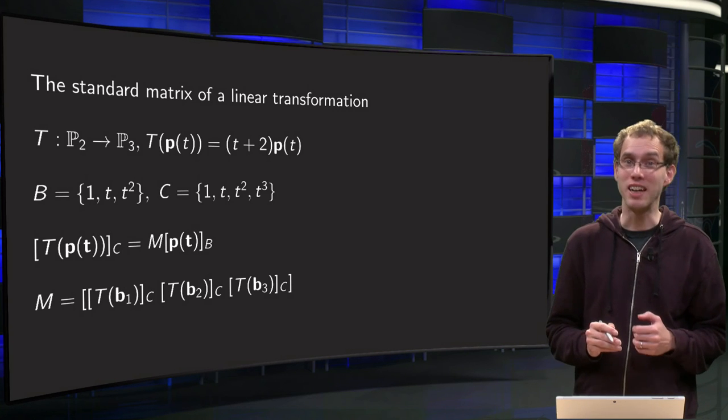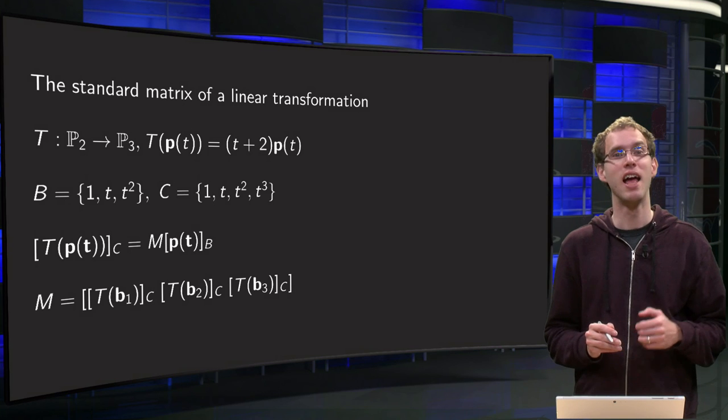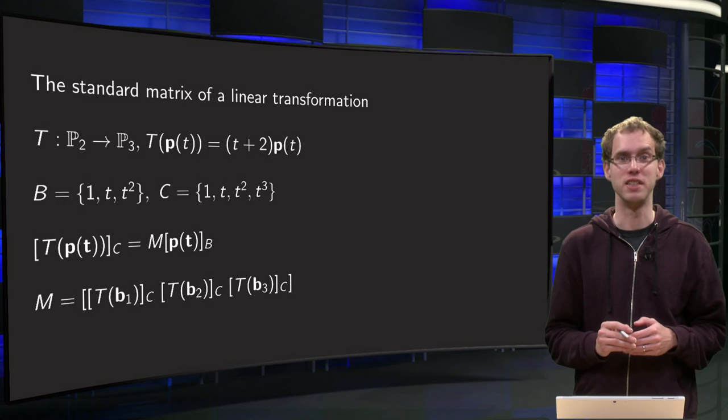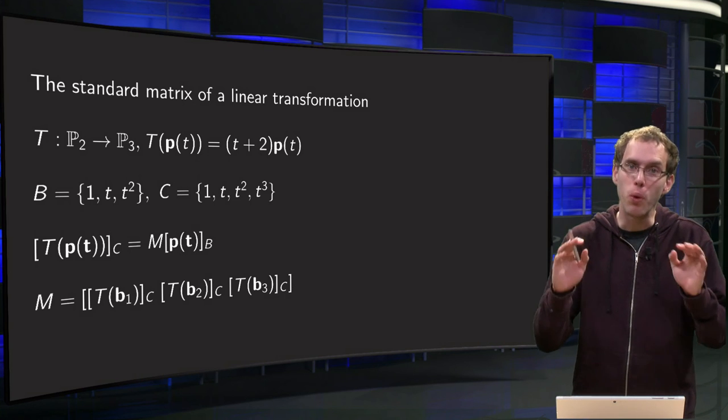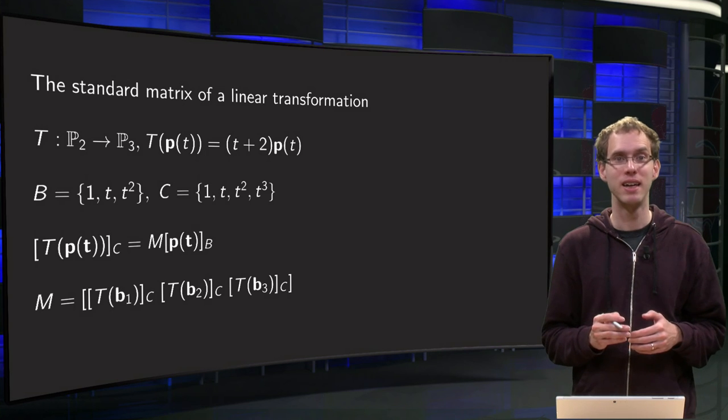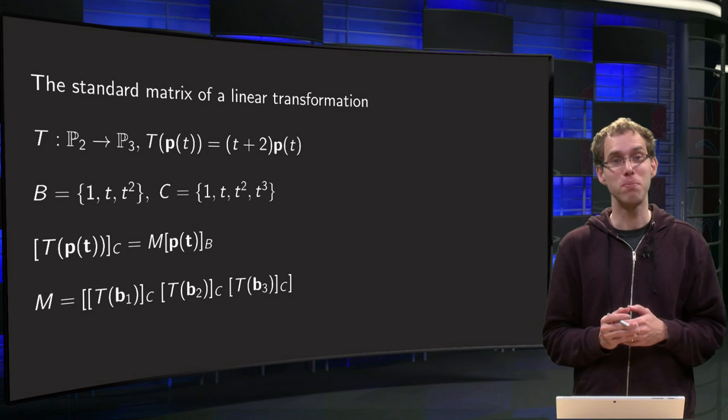You know that we can compute a standard matrix of a linear transformation, even when we have a transformation between two abstract vector spaces. In that case we need to work around, we need to use coordinate vectors in order to get back to R^n. But how does that work in practice?